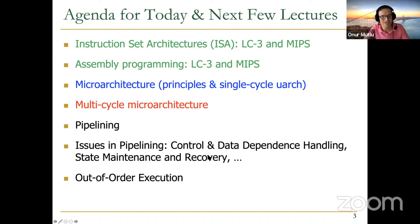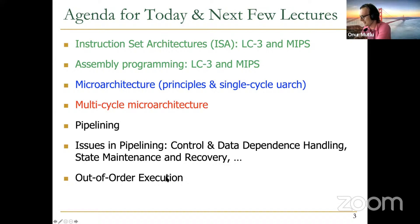We covered ISA and assembly programming last week, and we're doing microarchitecture right now. Then we're going to do more microarchitecture — multi-cycle microarchitecture — and then improve its performance with pipelining. We're going to discuss interesting issues: how to handle control and data dependencies, how to maintain state, and how to recover state when you have exceptions or branch mispredictions. After that, we'll move to out-of-order execution.